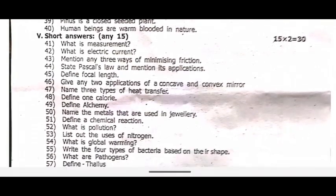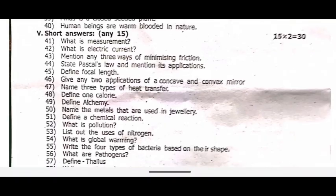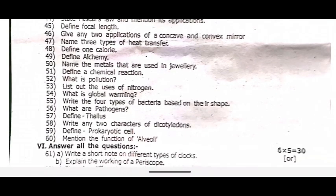Short answer — any fifteen. Forty-one, what is measurement? What is electrical current? Mention any three ways of minimizing friction. Important question — state Pascal's law and mention its application. Define focal length. Give any two applications of a concave and convex mirror. Name three types of heat transfer. Forty-eight, define one calorie. Forty-nine, define alchemy. Fifty, name the metals that are used in jewelry. Important — what is global warming?